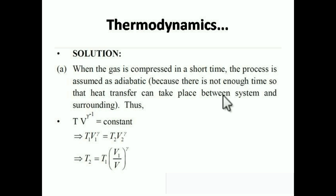For an adiabatic process, PV^γ = constant. Since volume and temperature are given, we use the formula in terms of V and T: T × V^(γ−1) = constant, which gives T1 × V1^(γ−1) = T2 × V2^(γ−1). Rearranging: T2 = T1 × (V1/V2)^(γ−1).